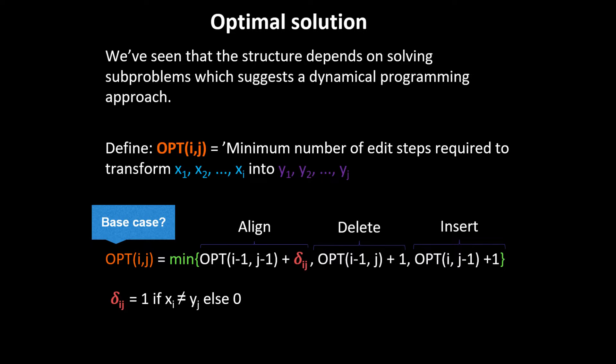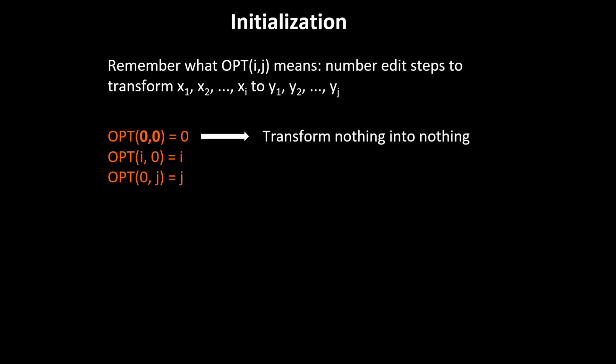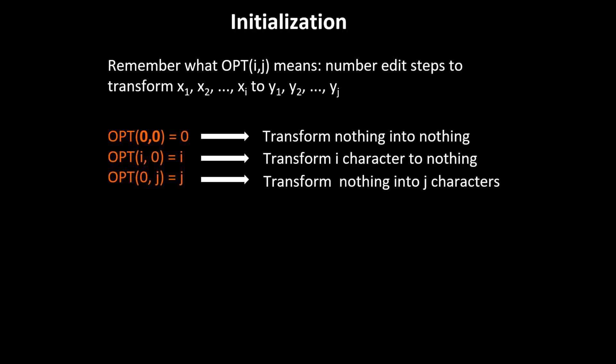This is a recursive formula, so we need to consider the base cases. opt(0,0) means transform nothing into nothing — cost 0. opt(i,0) means transform i characters into nothing — we do that by deleting the i characters, so cost i. opt(0,j) means transform nothing into j characters — we do that by inserting j elements, so cost j.